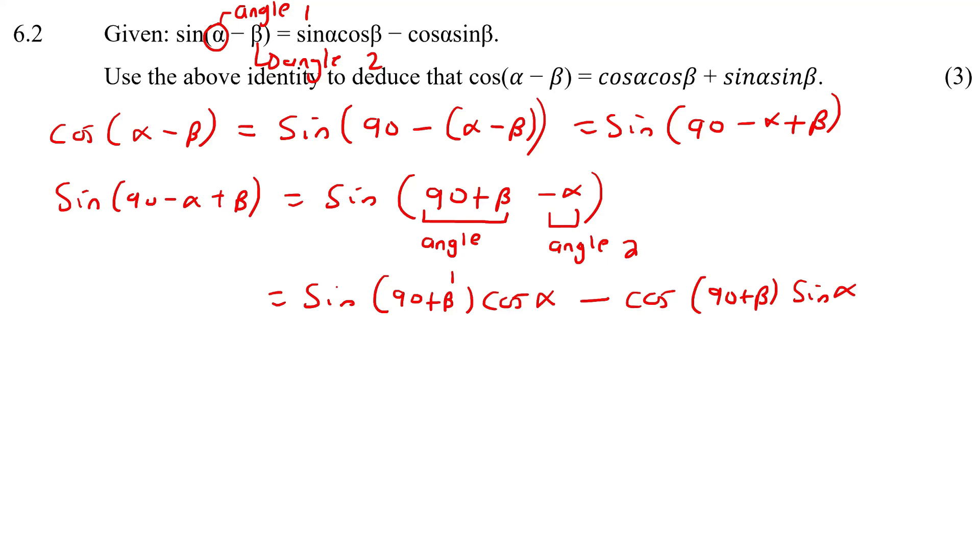Now, from co-functions, let's write out our four co-functions that we know. Let's write them over here. We know that, for example, sin(90 - x) is cos(x). Cos(90 - x) is sin(x). Sin(90 + x) is cos(x). And cos(90 + x) is -sin(x).